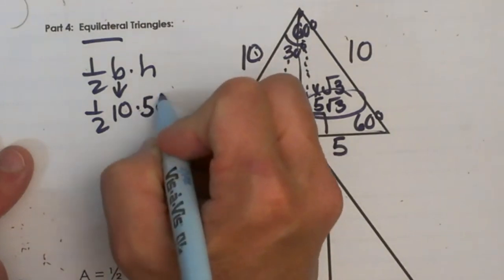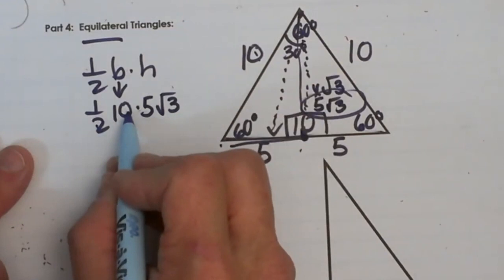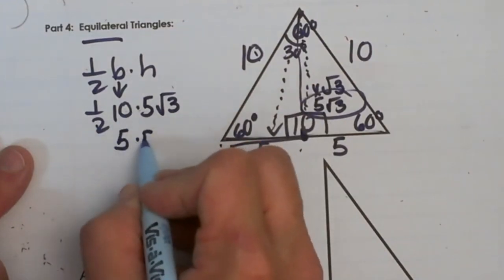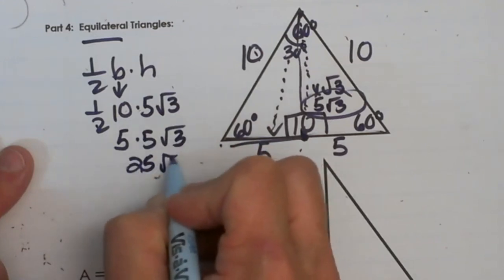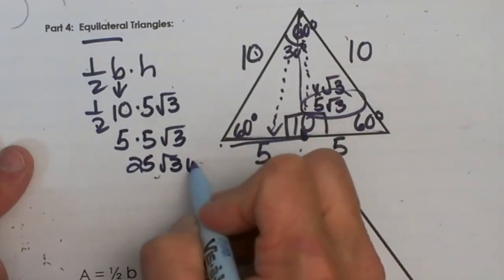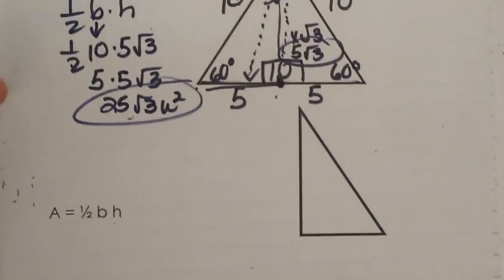So let's plug in 5 square root 3. Now let's multiply this together. One half of 10 is 5, and 5 times 5 is 25, so it is 25 square root 3. And area is always units squared. So there you go. That is how you would find the area given those sides.